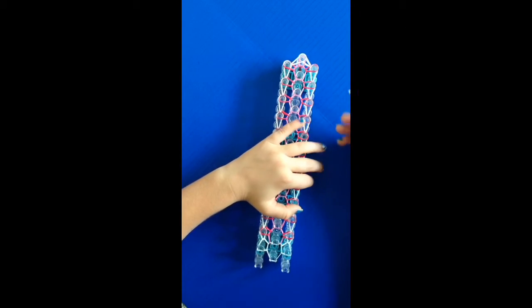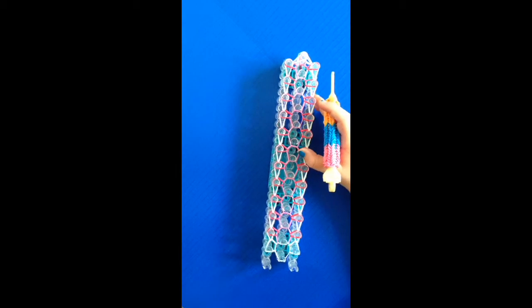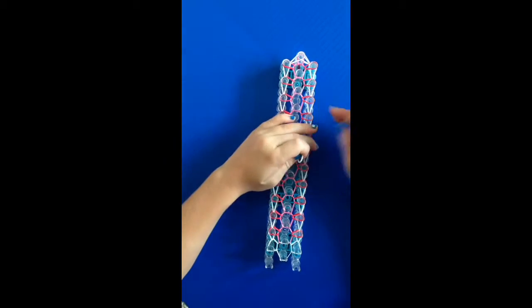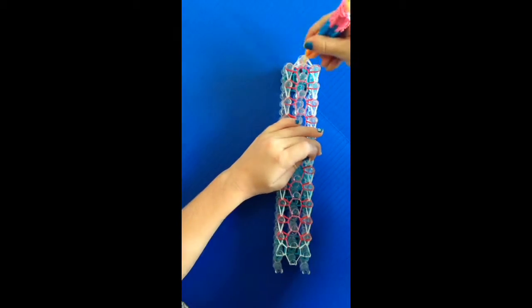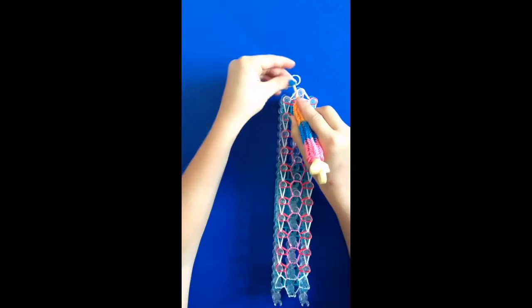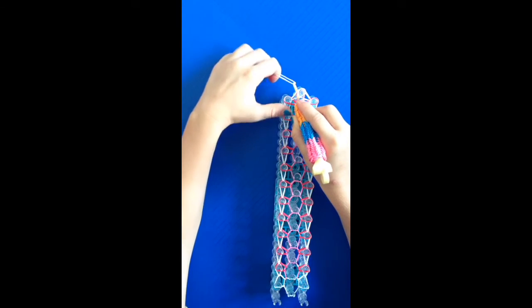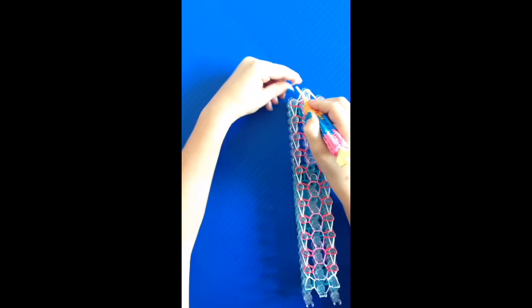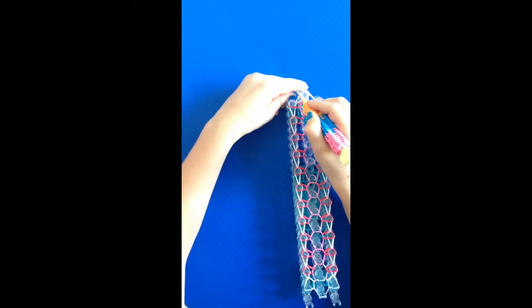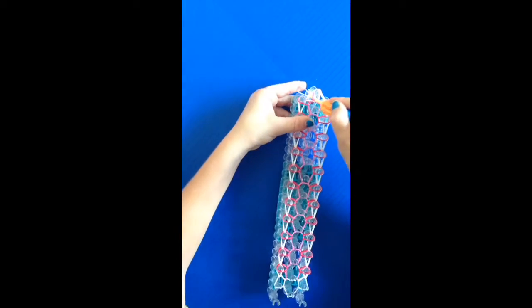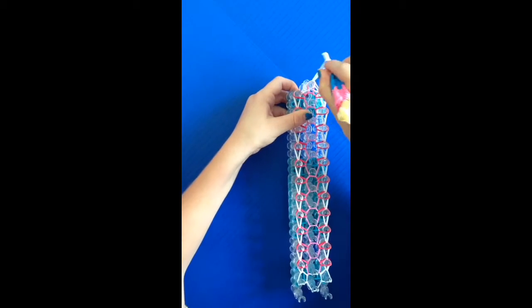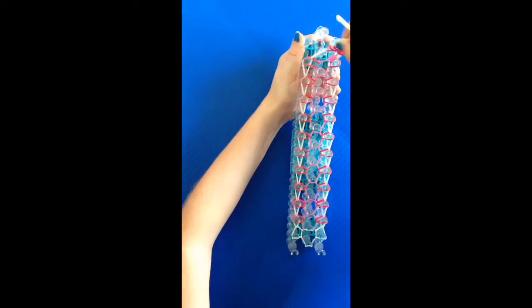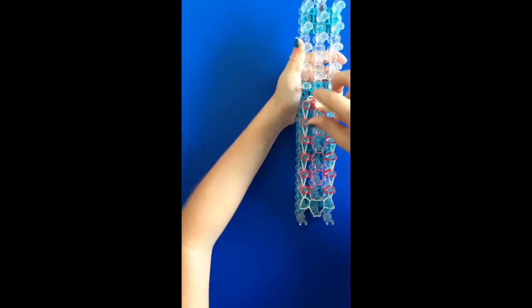Now grab the color that you would want your extension to be. Mine will be white for my border. Push these bands up and put your hook through. Grab that pink and put it on the tip of your hook. And now you're just going to pull that through and place it back onto your hook. And now you can take this off of the loom.